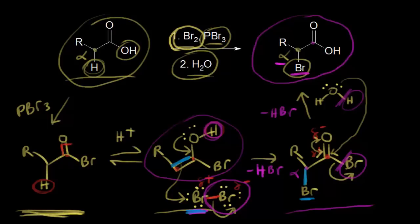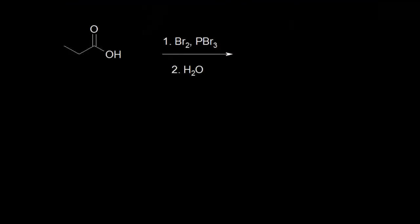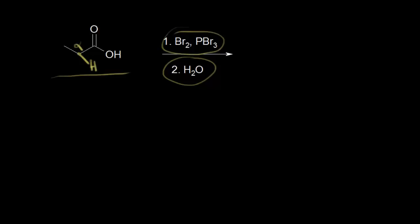One use for the HVZ reaction is to synthesize amino acids — that's one of the classic uses. We could make an amino acid starting from this carboxylic acid: propanoic acid, a three-carbon carboxylic acid. Reacting propanoic acid with bromine, phosphorus tribromide, and then water — the HVZ reaction — allows us to substitute the alpha position. There are two hydrogens bonded to that alpha carbon, and we substitute a bromine for one of them.